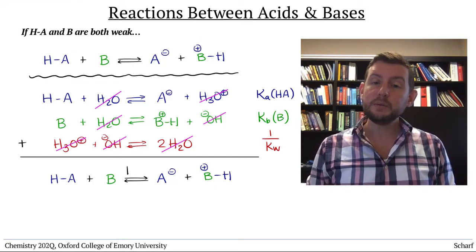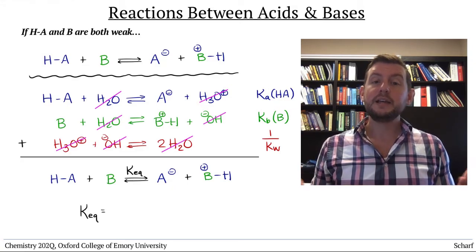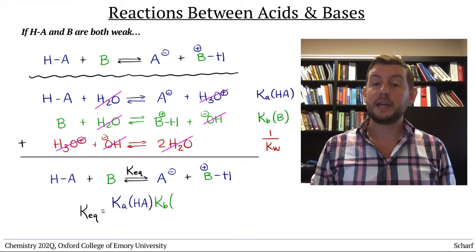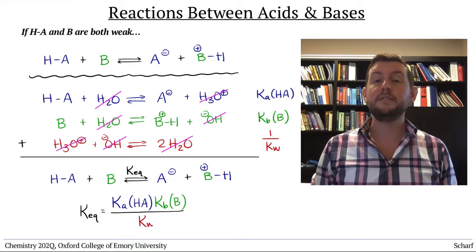So the equilibrium constant for the generic acid-base reaction is the product of these three equilibrium constants: the Ka of HA times the Kb of B, divided by Kw.